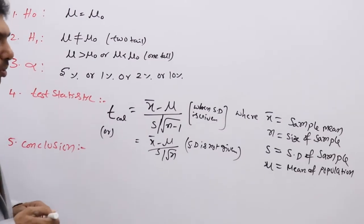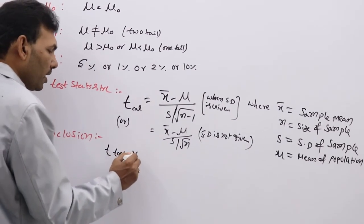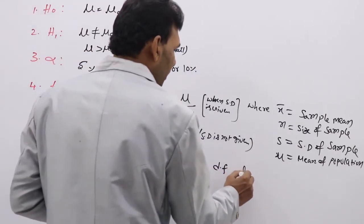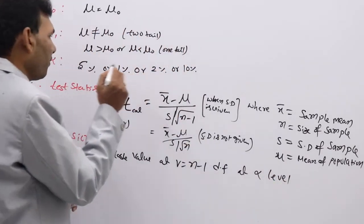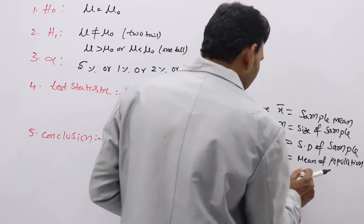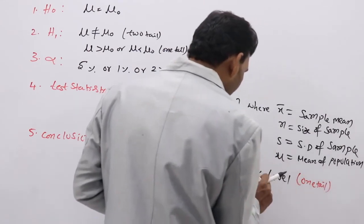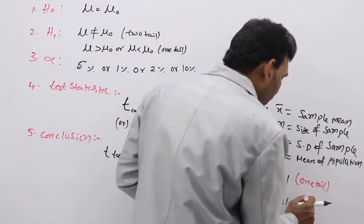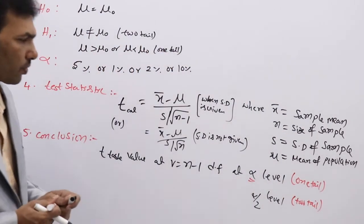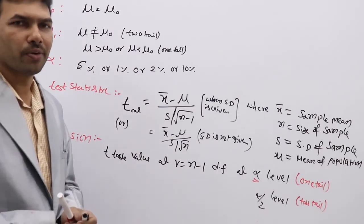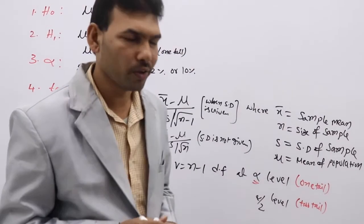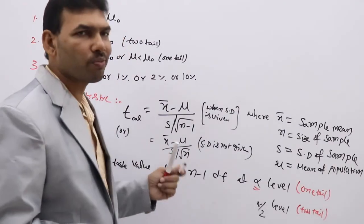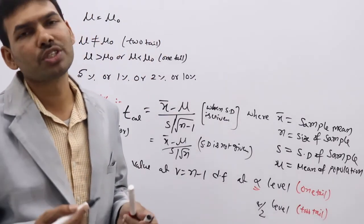For conclusion, calculate the t-table value at v = n − 1 degrees of freedom at the alpha level. For a one-tailed test, use alpha level directly. For a two-tailed test, use alpha/2. For example, for 5% (0.05) two-tailed, use 0.025. This value is obtained from the t-distribution table, similar to how the Z-distribution table is used in normal distribution.